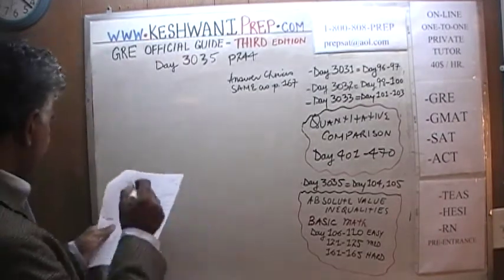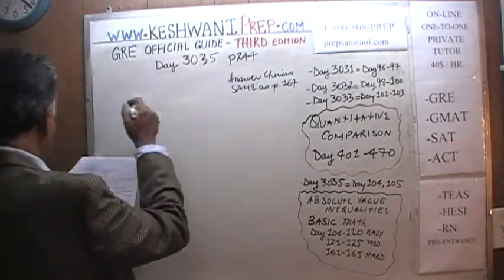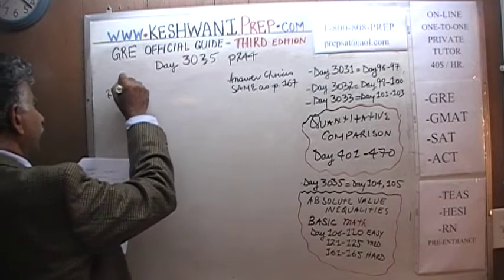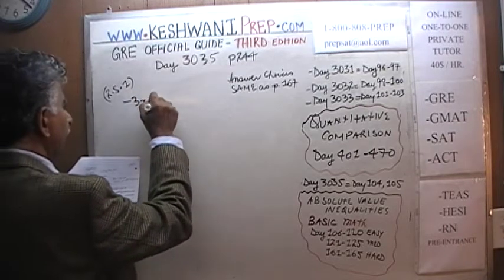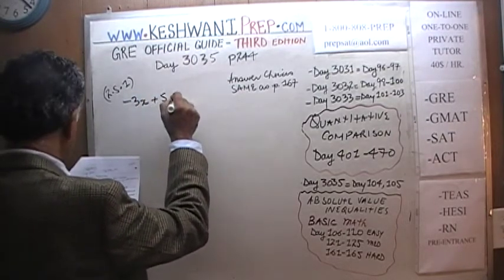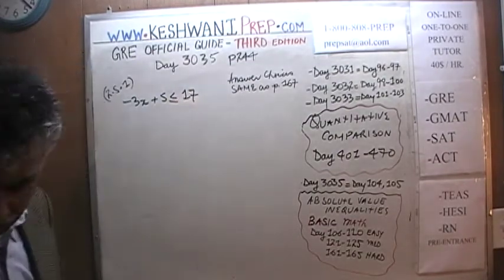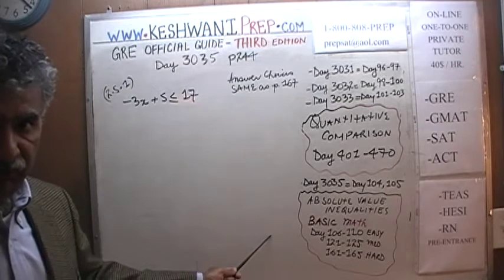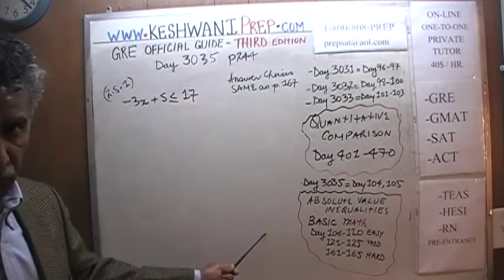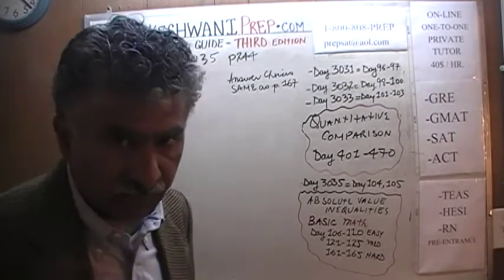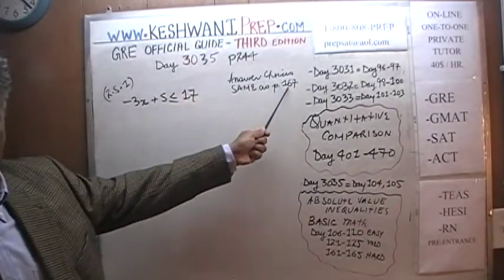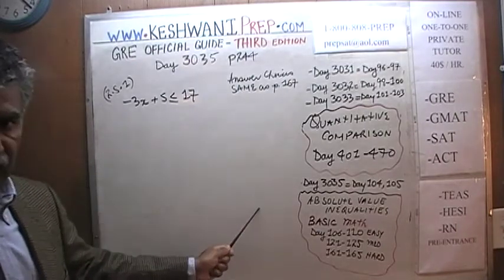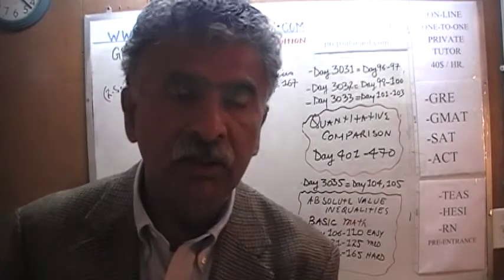Let's take a look at the very first one. We are on page number 244, example 2.5.1. It says: minus 3x plus 5 is less than or equal to 17. Before we jump in, let me give you the answer choices. The answer choices I'm going to put on the blackboard are not given in the book for this question — they are the same answer choices that appear on page 167. If you turn to page 167, you will see five answer choices. The same five answer choices will apply to the four problems we're going to do right now.